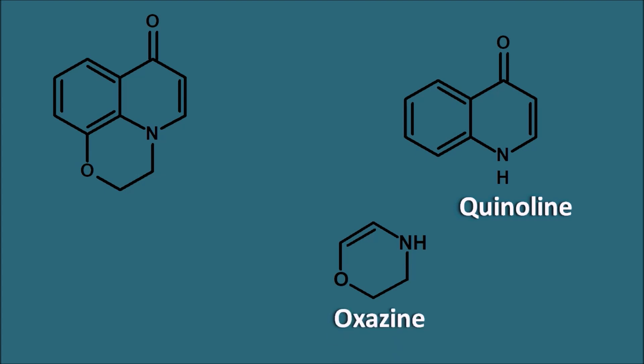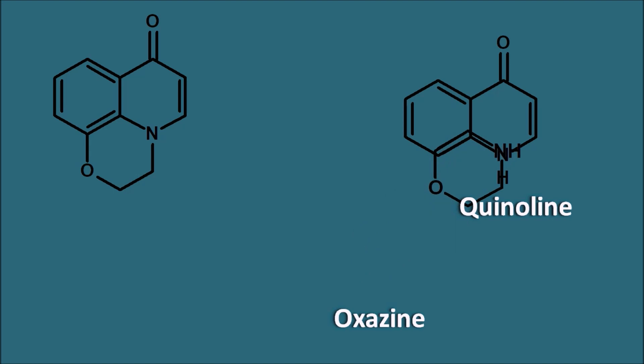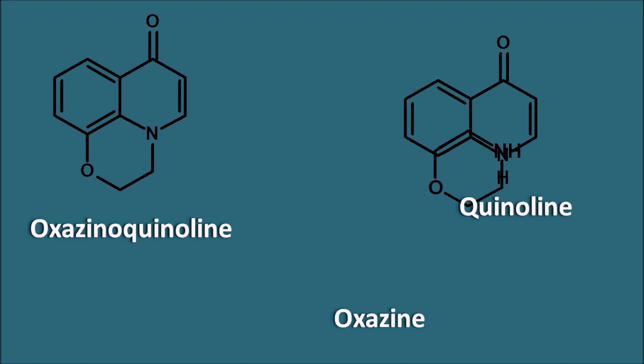This oxygen-nitrogen ring can also be called morpholine when it is saturated. This oxygen ring system is going to be fused with the quinoline such that it forms the basic structure of ofloxacin. That is why this basic ring can be considered as oxoquinoline — it is a fusion ring system between the oxygen and quinoline. But this is not the correct name according to IUPAC, so we cannot use this term while writing the IUPAC name of ofloxacin.